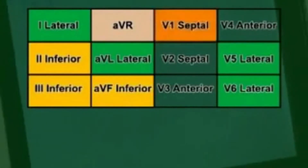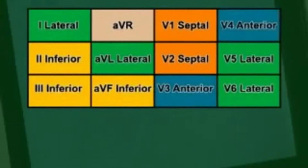V1 and V2 represent the septal wall. V3 and V4 are contiguous and look at the anterior wall.